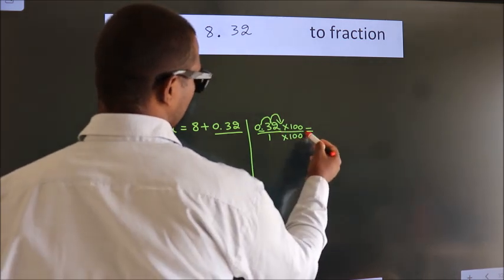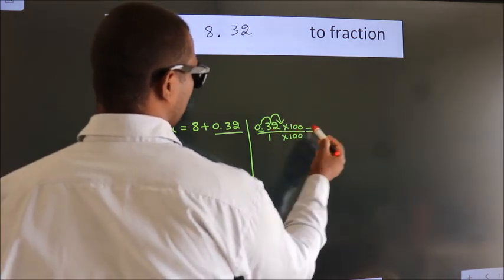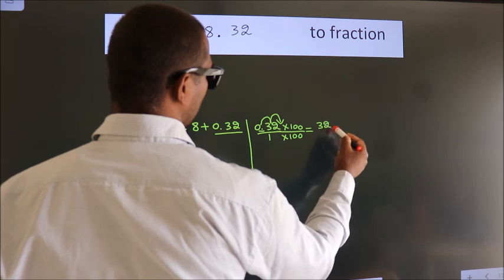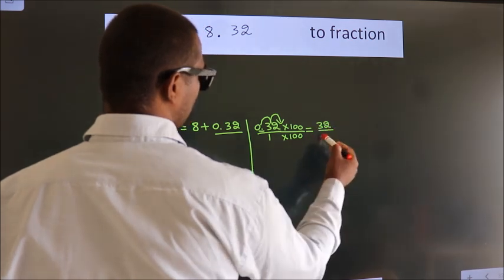Next, 0.32 into 100 is 32. 1 into 100 is 100.